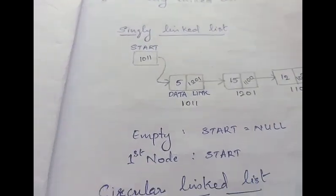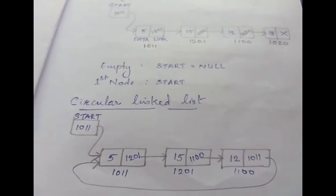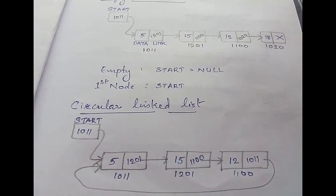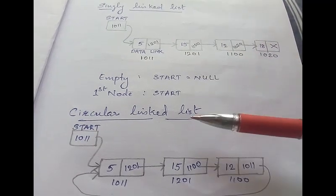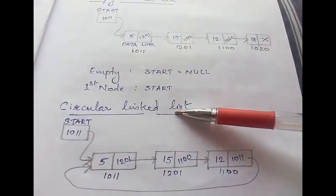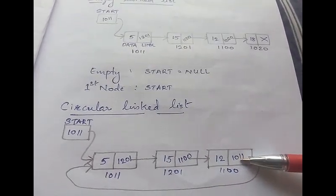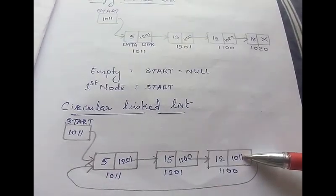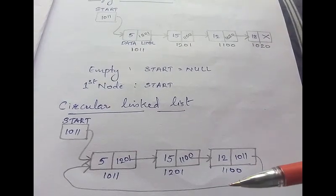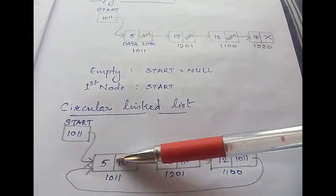Now let's see the next one: the circular linked list. The difference between a singly linked list and a circular linked list is that in a circular linked list, the link part of the last node contains the address of the first node — meaning the last node points to the first node.